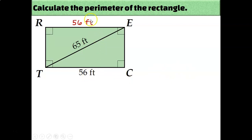But since it's a rectangle, the other side, the opposite side, must also be 56 feet. So really all we need to figure out is the length of RT and the length of EC. 65 is not going to factor into our perimeter because it's not a distance on the outside of the shape. 65 is the distance of the diagonal. But this diagonal actually creates two right triangles.